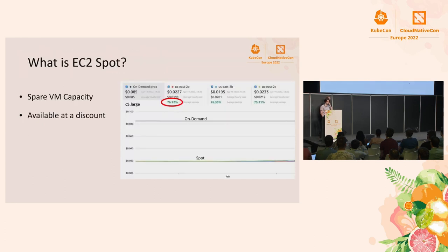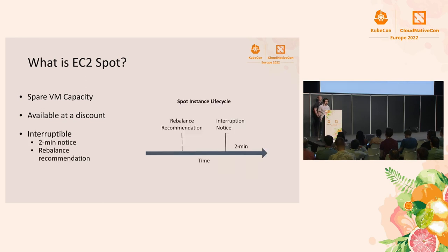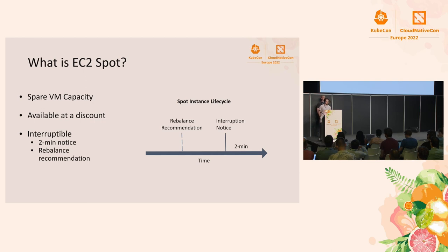So what is EC2 Spot? EC2 Spot is spare virtual machine capacity available at a steep discount from on-demand instances. These instances are the same underlying instance — the only difference is that they are interruptible. EC2 can claim these instances when needed for an on-demand customer, and they'll give you a two-minute notice. Sometimes EC2 can also give you a rebalance recommendation to give you some more time, and we'll talk about that later.